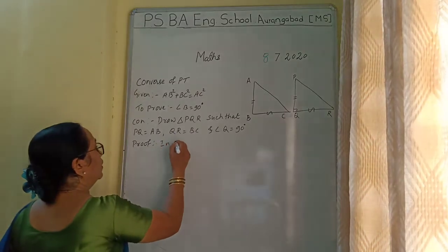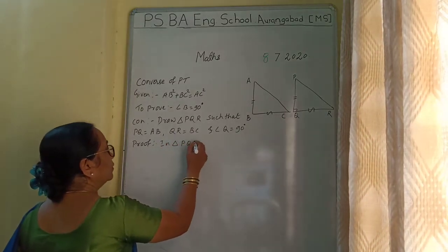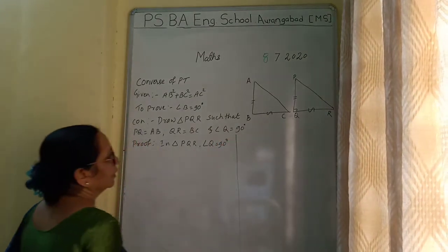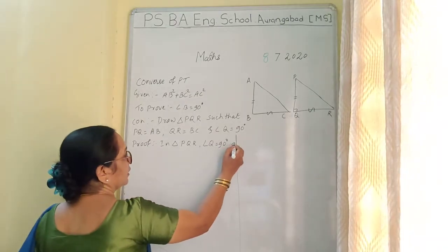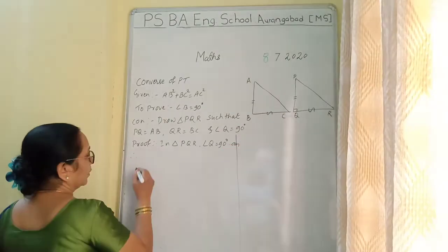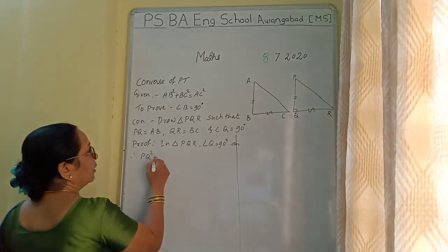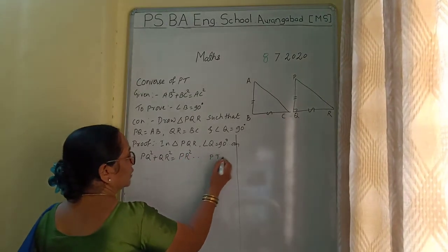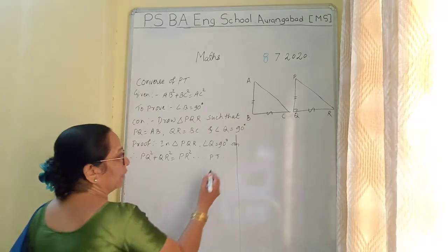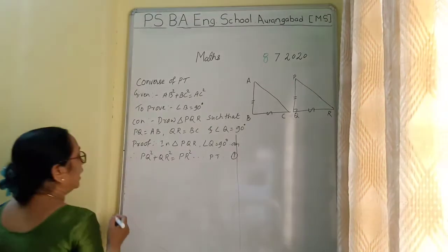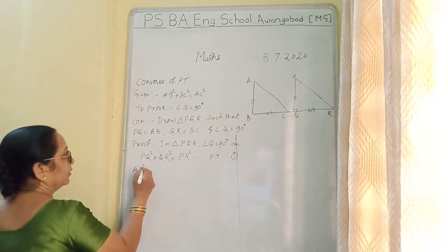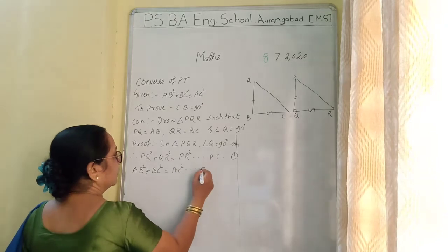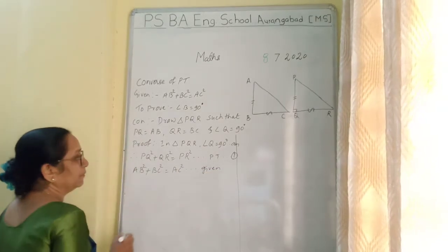Proof. In triangle PQR, angle Q is equal to 90 degrees — this is by construction. Therefore, PQ square plus QR square is equal to PR square, by the Pythagoras theorem. This is statement number 1. Now, we have AB square plus BC square is equal to AC square, which is given to us. This is statement number 2.